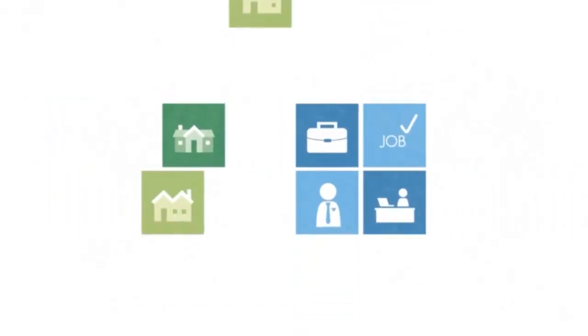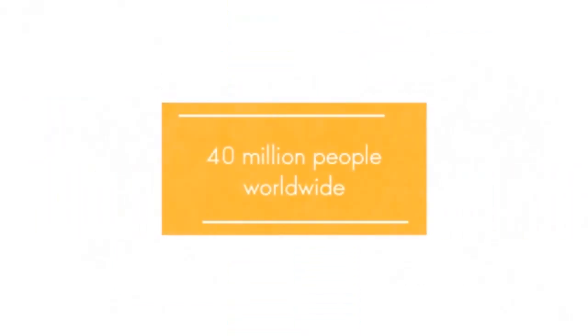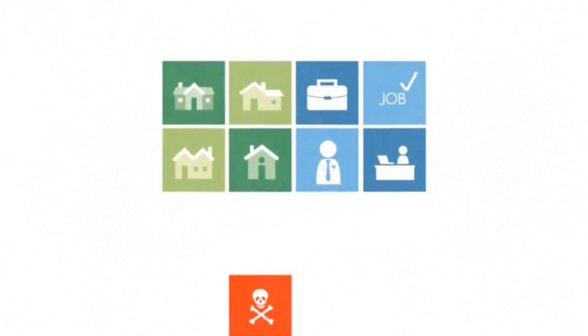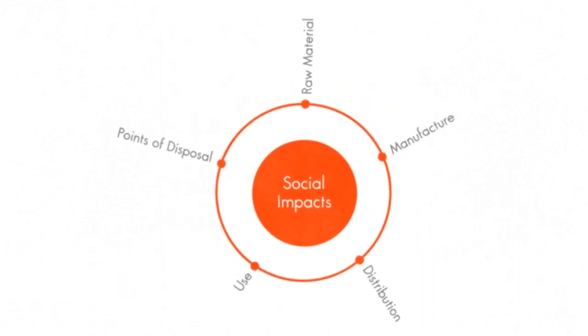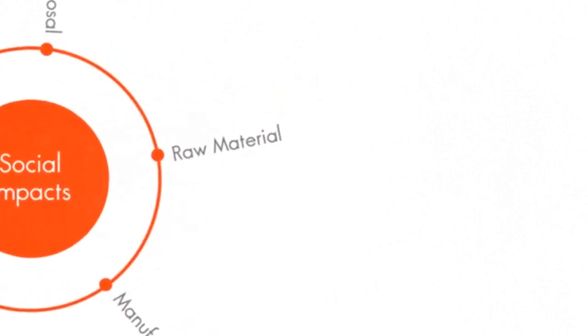The textile and fashion industry provides jobs and livelihoods to over 40 million people worldwide. But a large majority of these workers are being paid very low wages and working in unethical or dangerous conditions. There are social impacts at each stage of the life cycle.